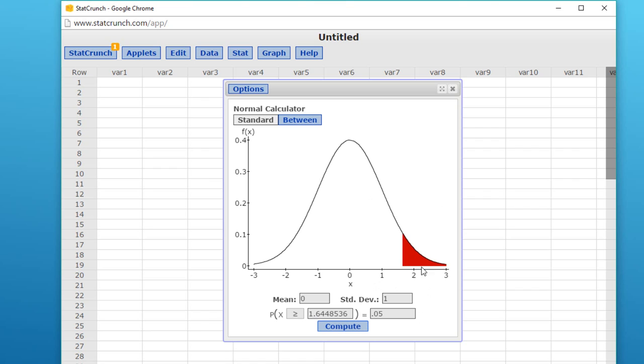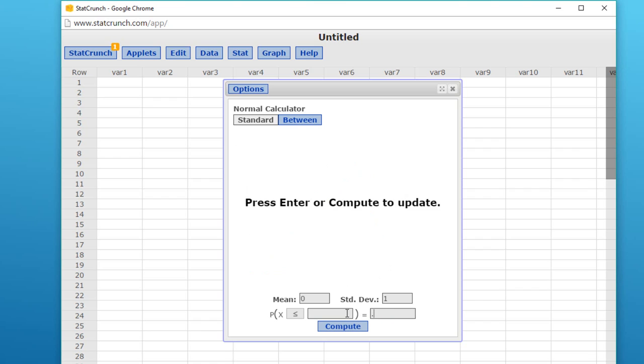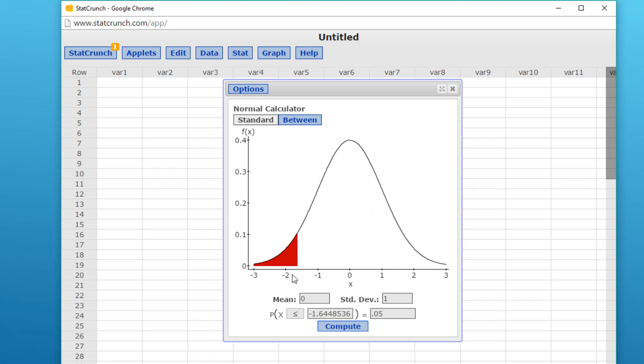Or again, if we go less than, we see our left rejection region. So a z that's either in the lower rejection region, a z that is smaller than -1.645, or a z that is greater than +1.645.